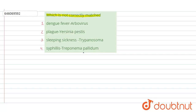If we talk about the fourth option, syphilis and Treponema pallidum, this is correctly matched because syphilis is a sexually transmitted disease and it is caused by the bacteria Treponema pallidum. So this is a correctly matched option, making it a wrong answer to the question.